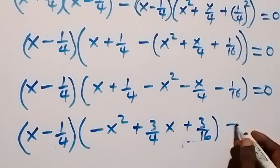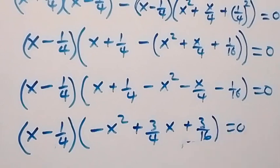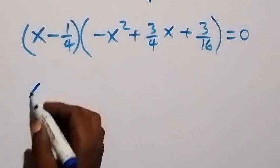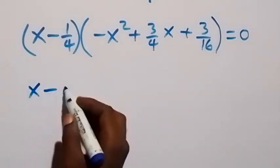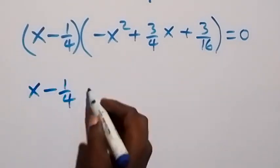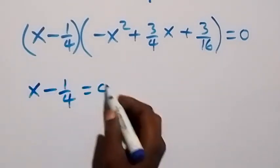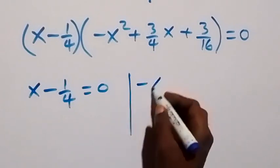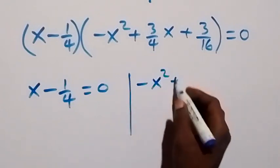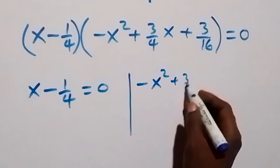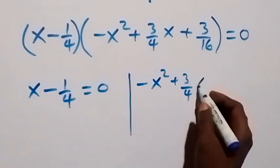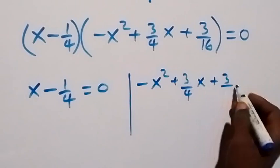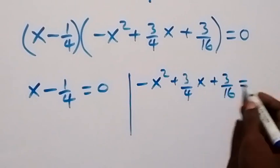This equals to zero. There are two possible cases. The first: x minus 1 over 4 equals to zero. Or we have minus x squared plus 3 over 4 x plus 3 over 16 equals to zero.